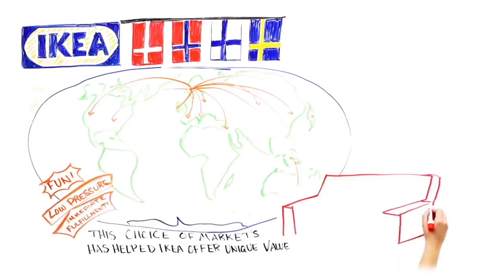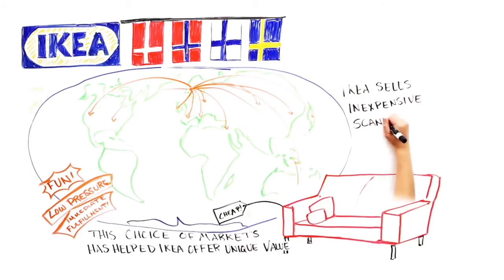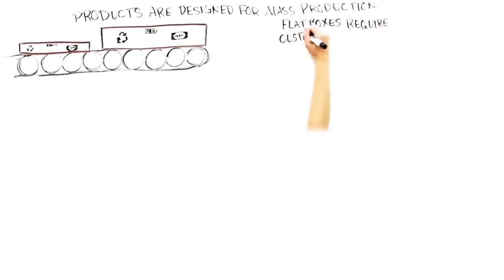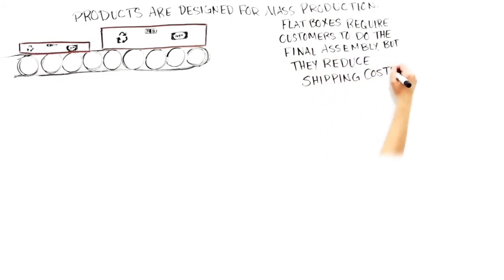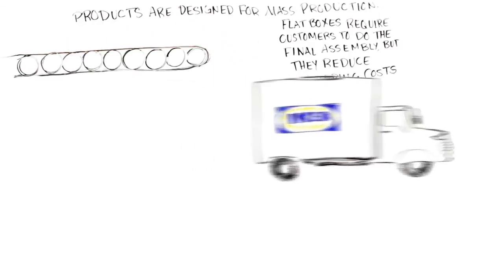Ikea is able to sell inexpensive, stylish furniture because they've developed excellent design capabilities for inexpensive Scandinavian design. But perhaps even more important is the fact that products are designed to be manufactured by suppliers using mass production techniques, and then shipped in flat boxes. The flat boxes require that final assembly is done by the final customer, but this dramatically drops shipping costs. Because shipping costs are so low, Ikea's suppliers can manufacture furniture in high volumes and ship it around the globe.